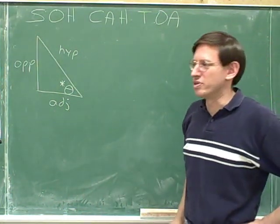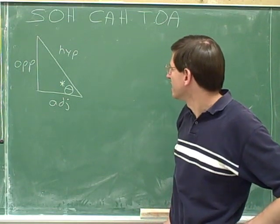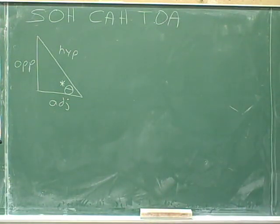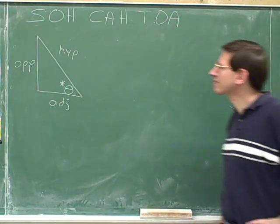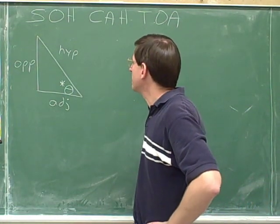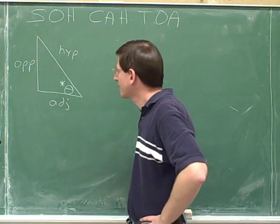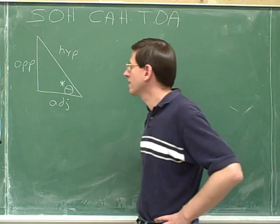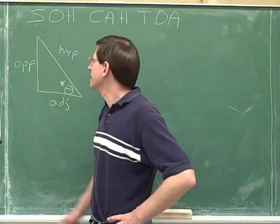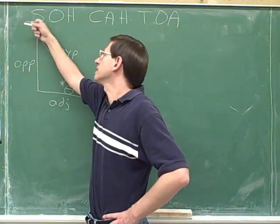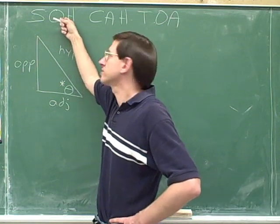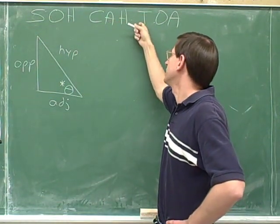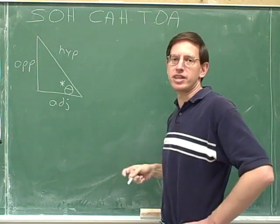For some reason, it's very easy to remember that mnemonic — SOHCAHTOA. So here we have the mnemonic SOHCAHTOA. Let's see how that helps us remember what sine, cosine, and tangent mean. What this stands for is that the sine is the opposite over the hypotenuse, the cosine is the adjacent over the hypotenuse, and the tangent is the opposite over the adjacent.